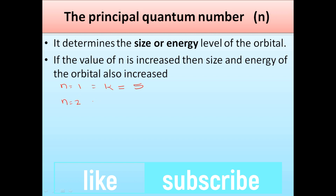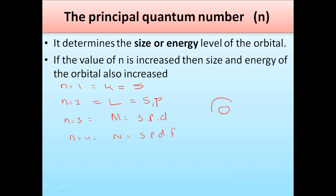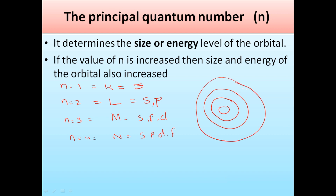When n = 1 we have the K shell. When n = 2 we have the second shell L, which has orbitals s and p. When n = 3 we have shell M, which has orbitals s, p, and d. When n = 4 we have shell N, which has four orbitals: s, p, d, and f. The size increases from K to L to M to N.